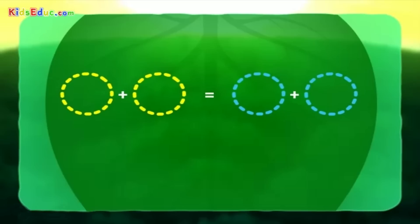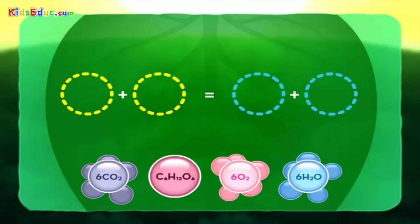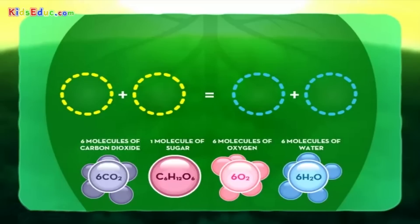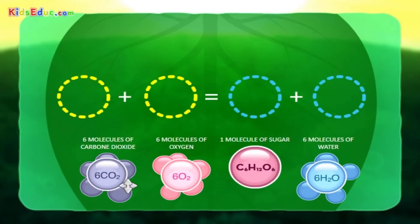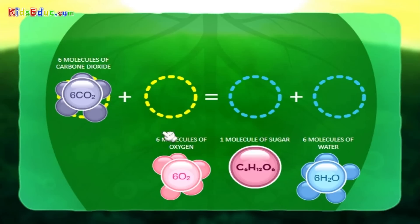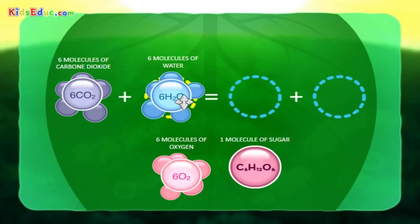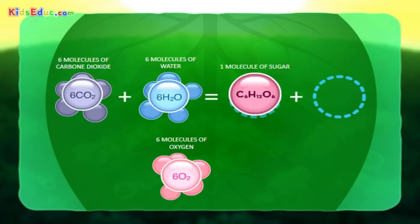Now that you know more about the photosynthesis equation, it's your turn to build some sugars — it'll be sweet. 6 molecules of carbon dioxide plus 6 molecules of water equals 1 molecule of sugar plus 6 molecules of oxygen.